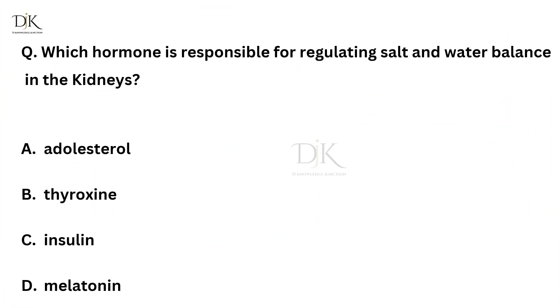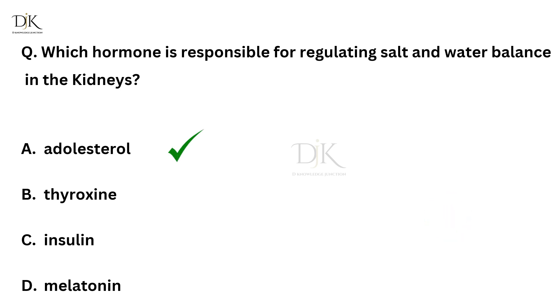Which hormone is responsible for regulating salt and water balance in the kidneys? Right answer is aldosterone.